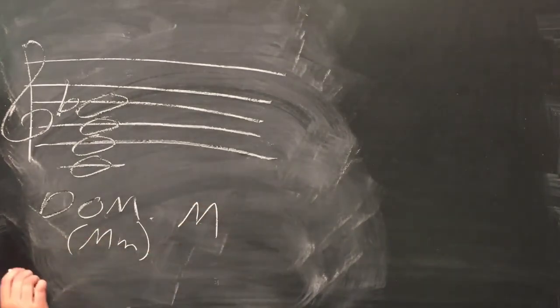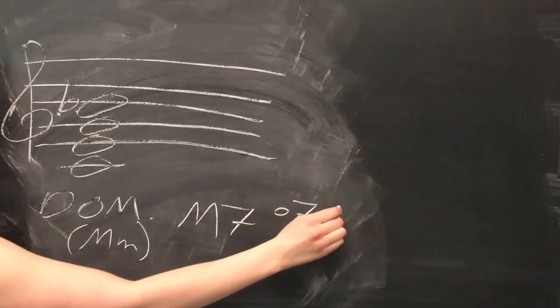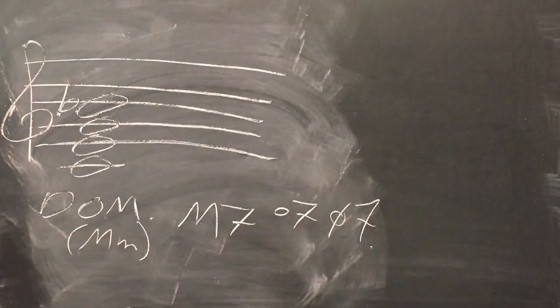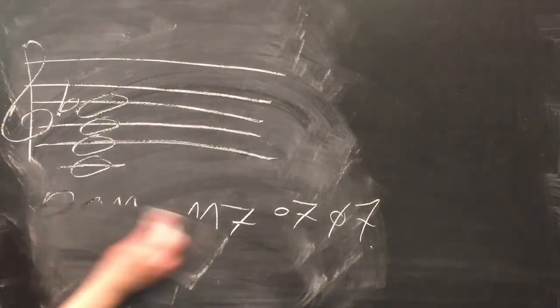The seventh chord you're probably most familiar with is the dominant seventh, which is a major triad with a minor third stacked on top for the seventh. In addition to the dominant seventh, we also have the major seventh, diminished seventh, and half-diminished seventh.